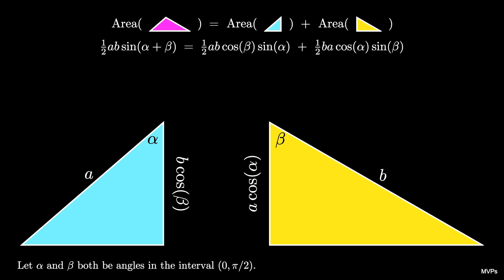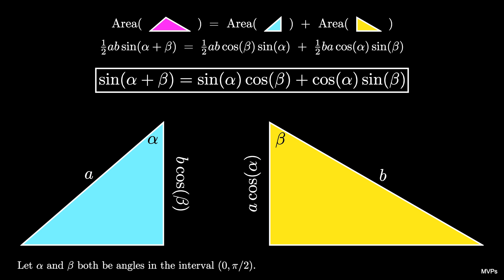We can cancel the (1/2)AB from both sides of this equation, and that results in the formula sin(α + β) = sin(α) cos(β) + cos(α) sin(β). This is the sine of a sum formula.